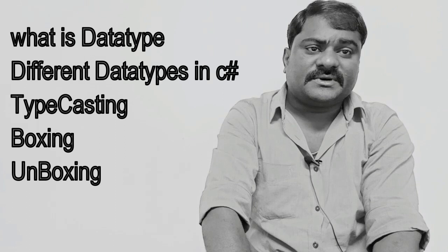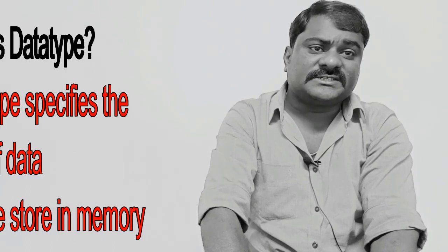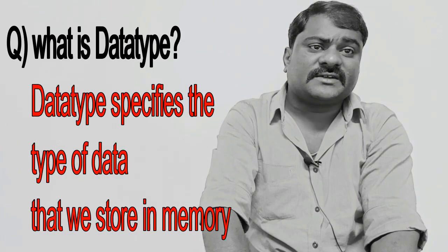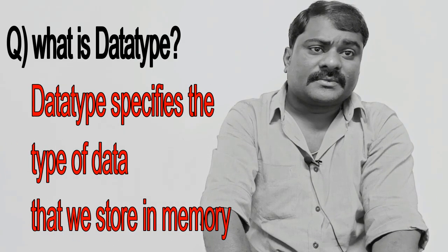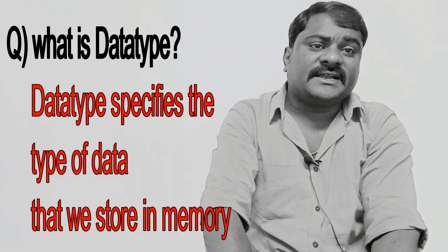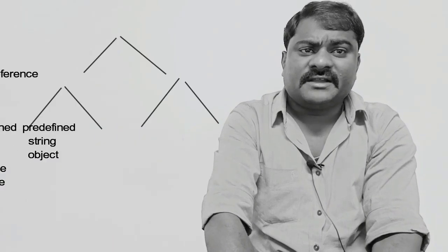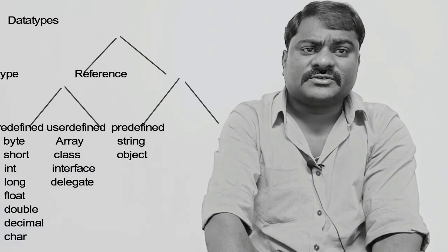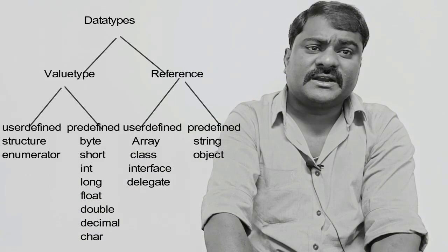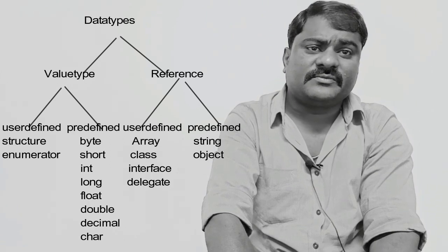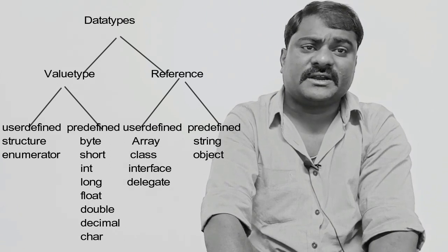What is a data type? A data type specifies the type of data that we store in memory. Data types are basically divided into two types: value type data type and reference type data type. Value type data type is again divided into two types: user defined and predefined. Reference type is again two types: user defined and predefined.